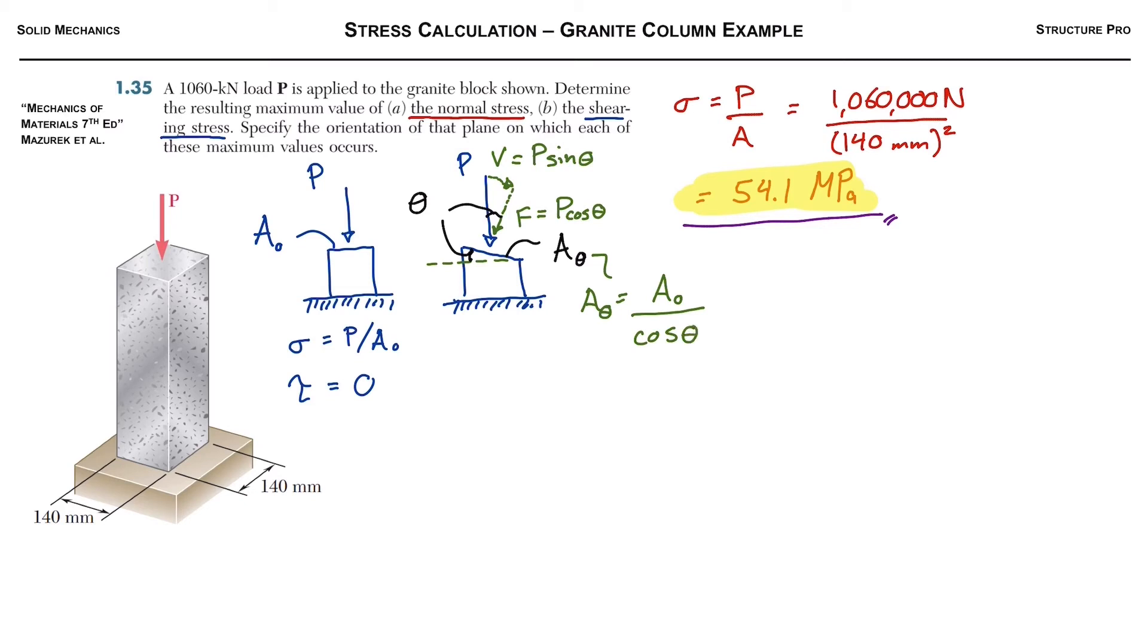So now let's rewrite our equations for the normal stress and the shear stress on this plane. The normal stress sigma theta will be F over A theta, and then the shear stress will be V over A theta.